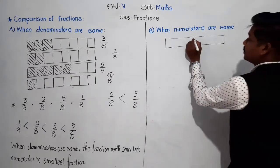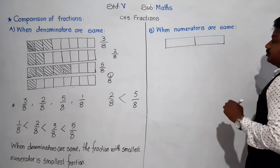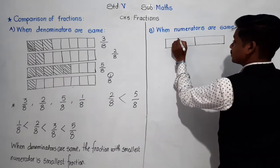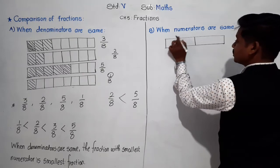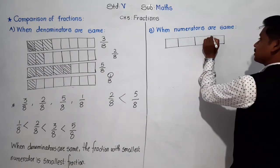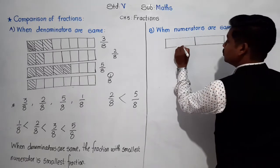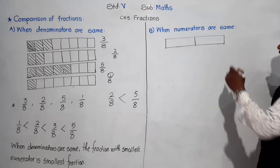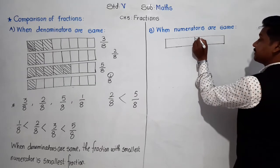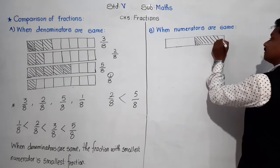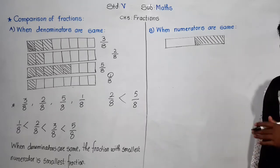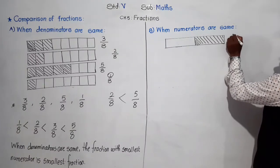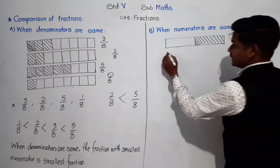There is one chocolate. The first chocolate is divided into only two parts, and out of two parts, one part is shaded. So the fraction for this shaded part is 1/2 — total two equal parts, one is shaded.